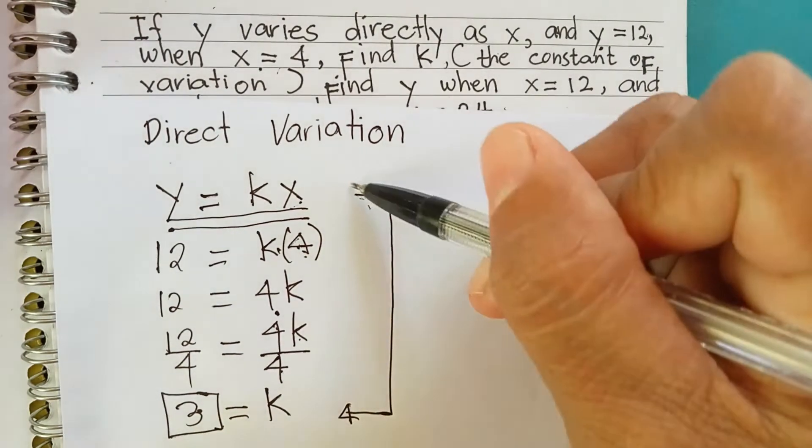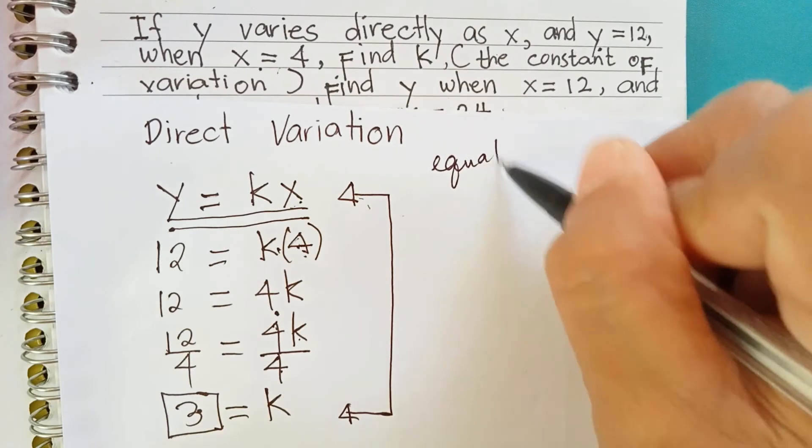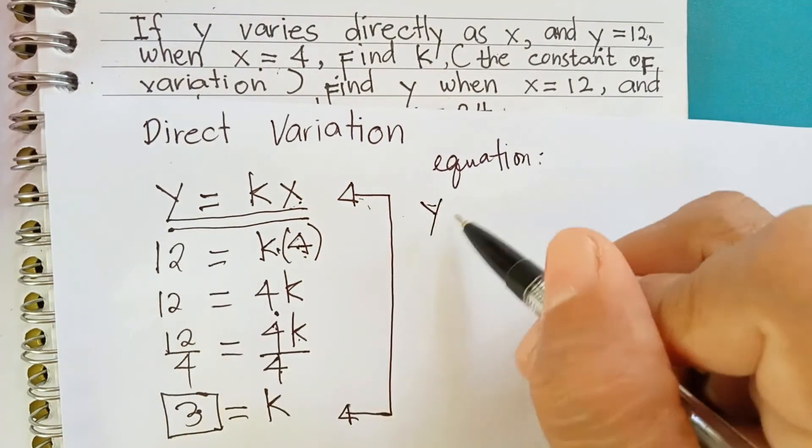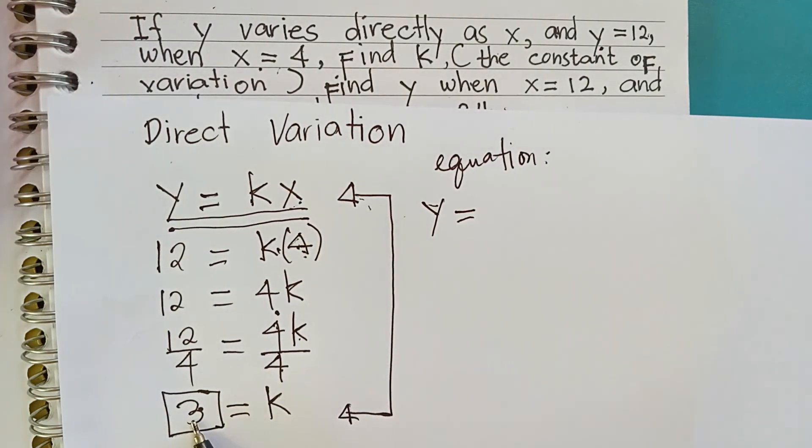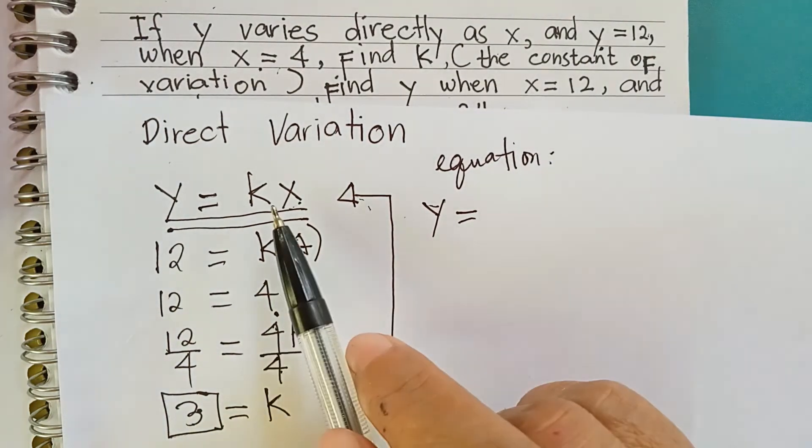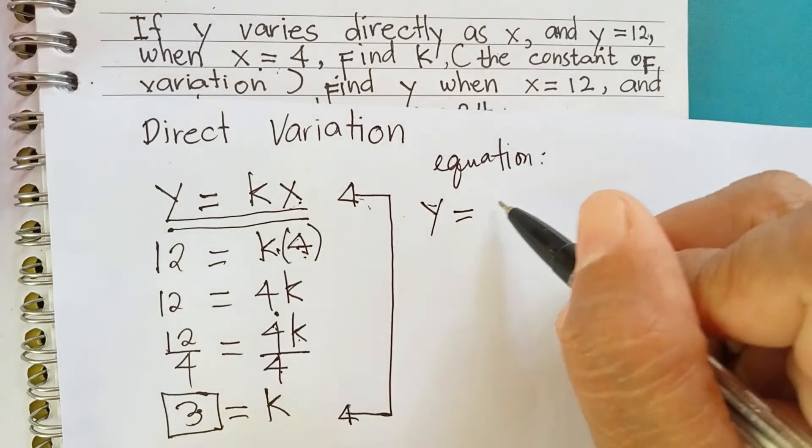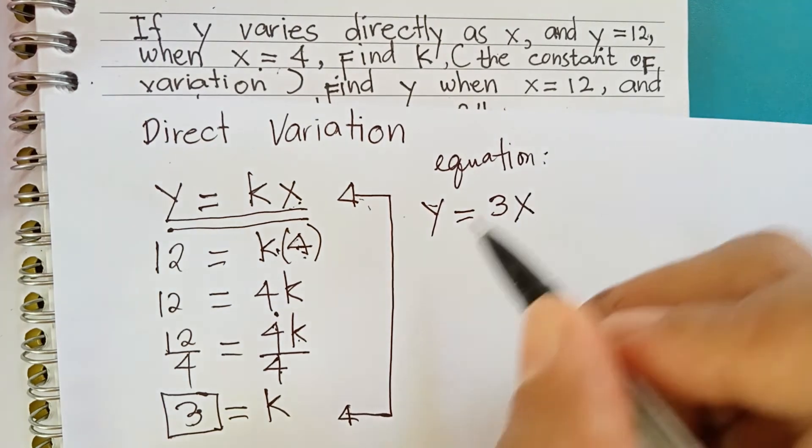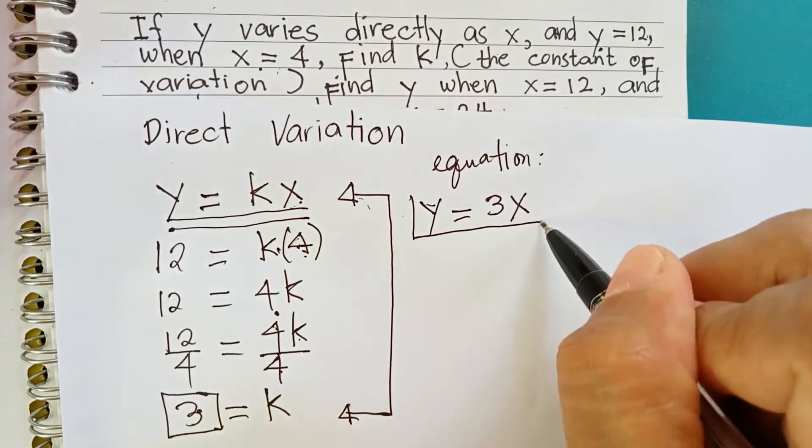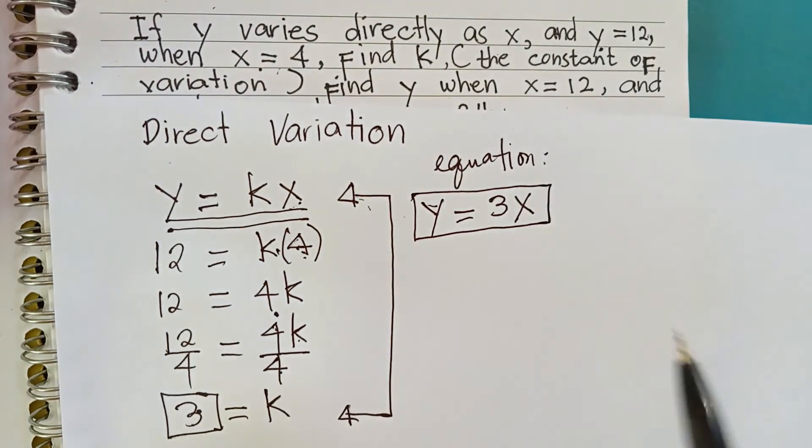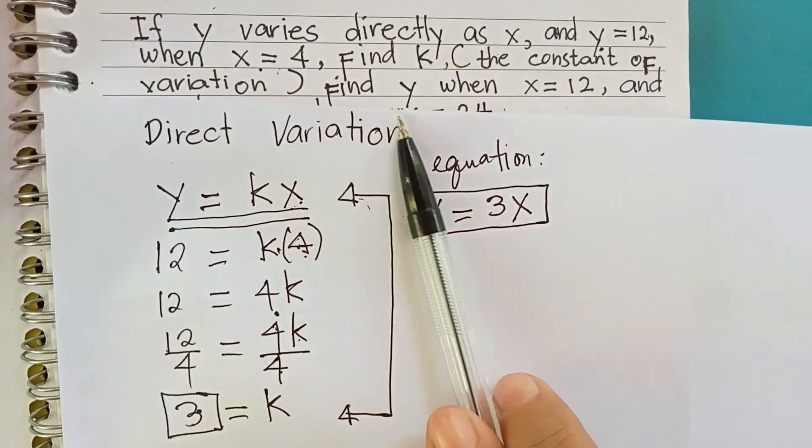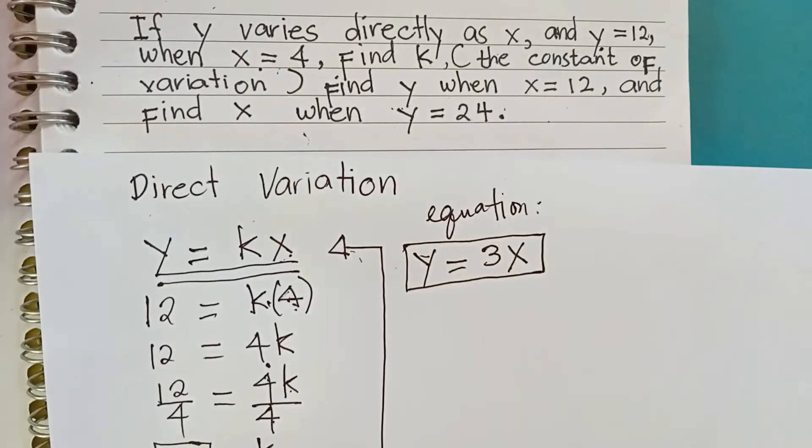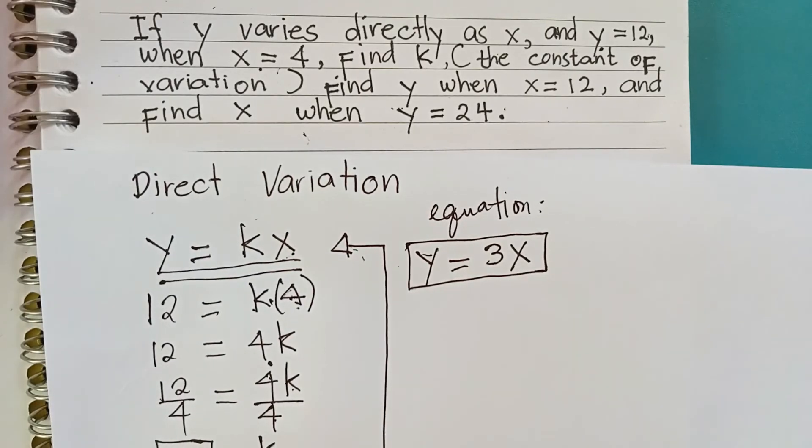So, bali, ang equation ana niya, using the formula y is equal to substitute na ito ang value sa 3 deri sa k. So, makita bohan na, that is 3x. This is now our equation in order to find the remaining unknowns, the y and the x. Okay.